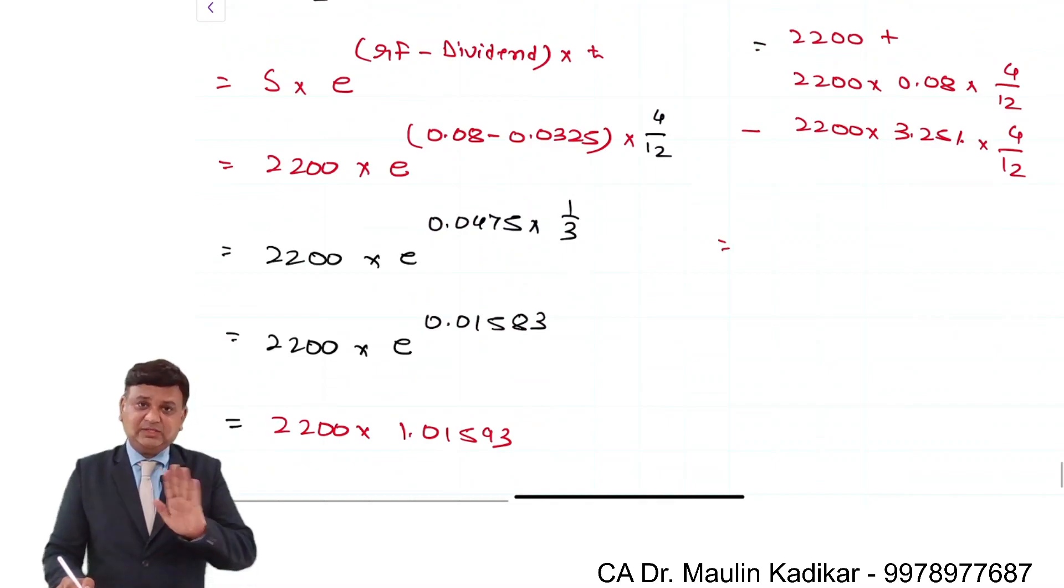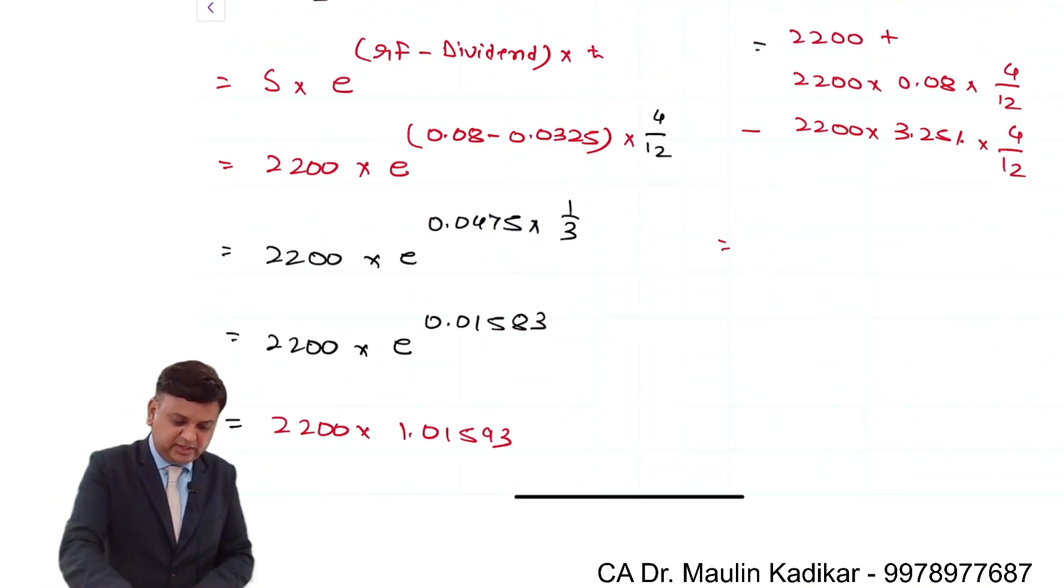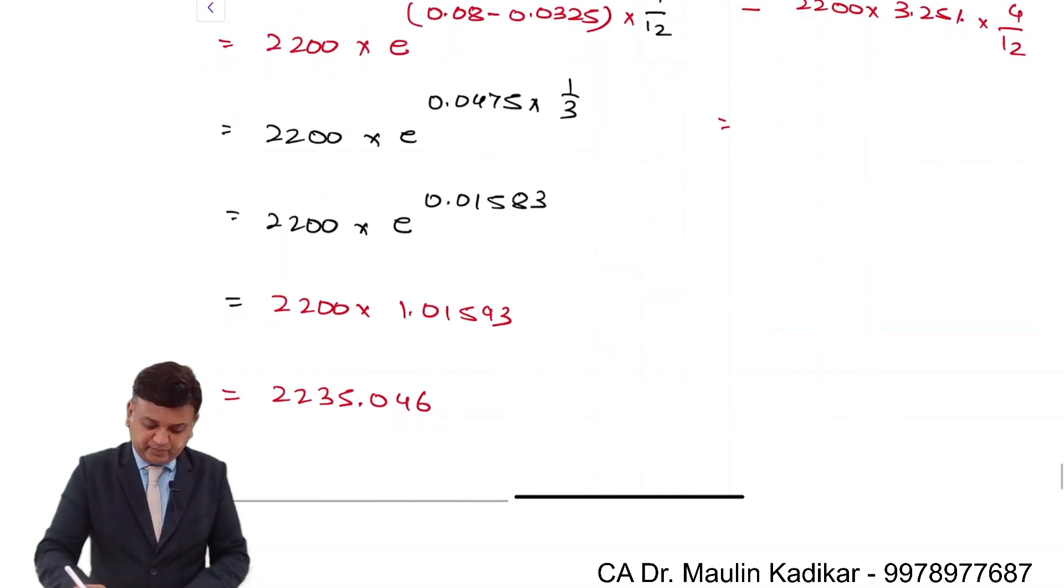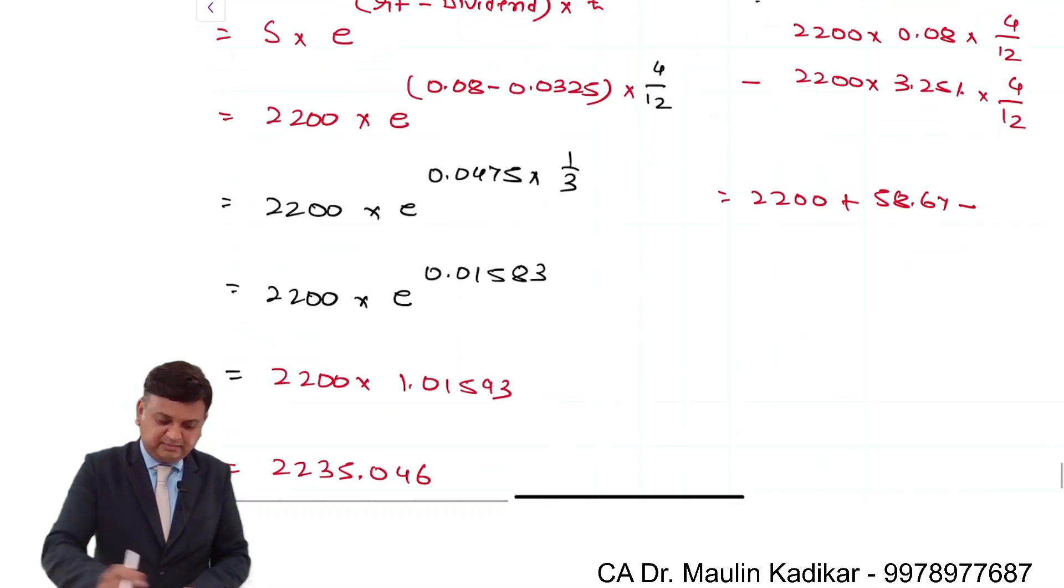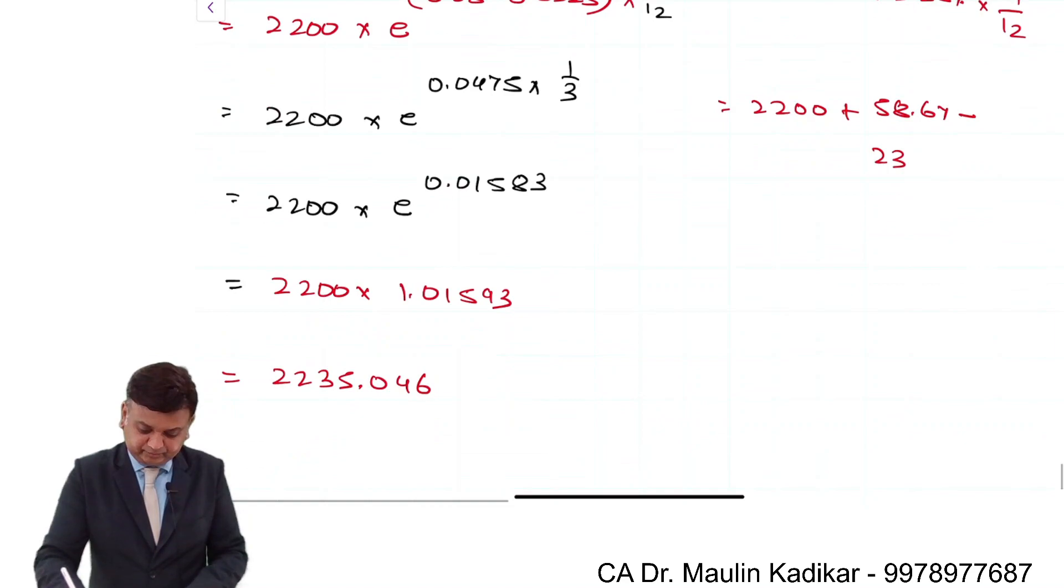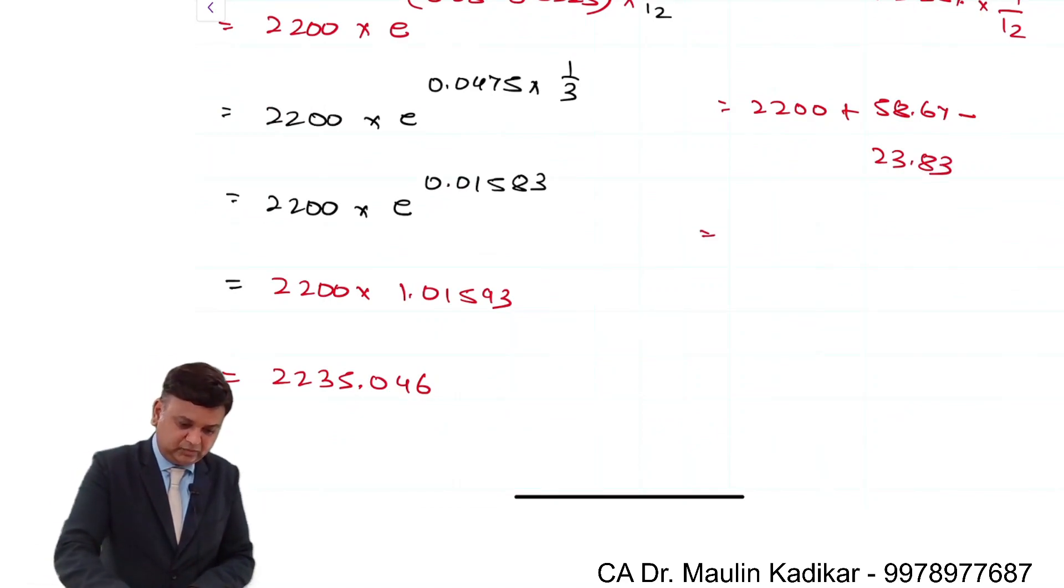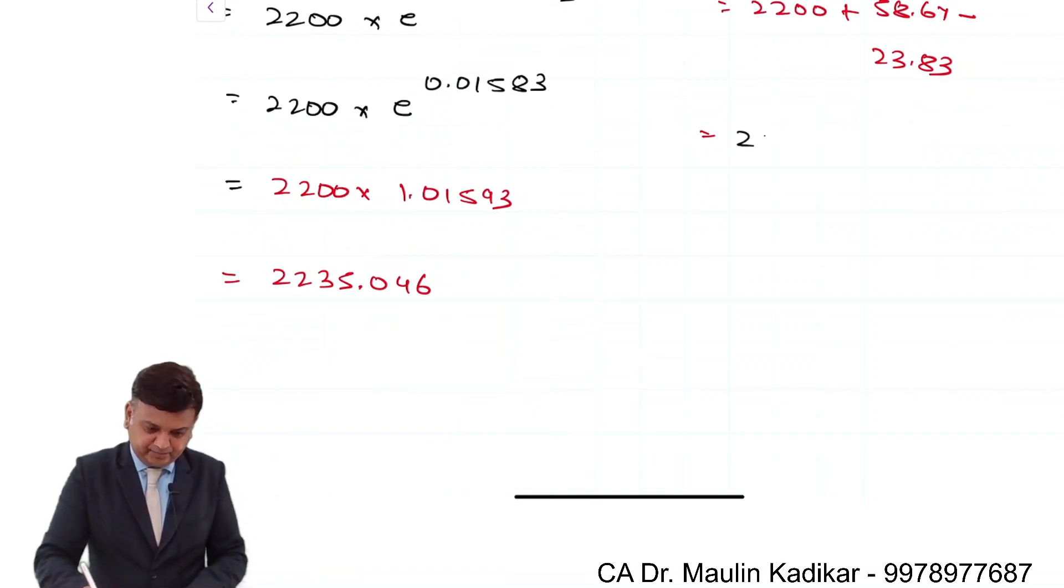In a normal situation, what would happen? 2,200 × 8% × 4/12 equals 58.67. So 2,200 + 58.67 - (2,200 × 3.25% × 4/12), which is 23.83. Therefore, 2,200 + 58.67 - 23.83 equals 2,234.84.